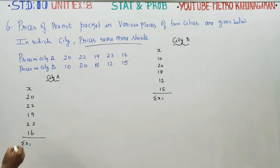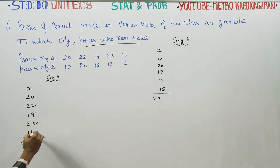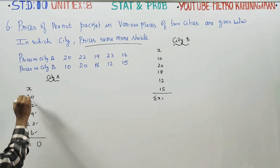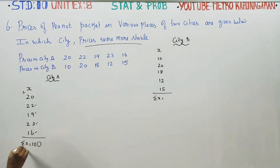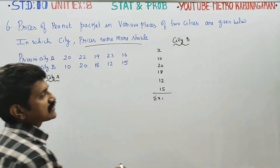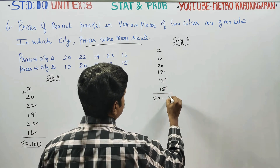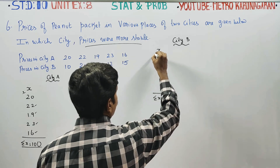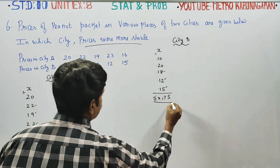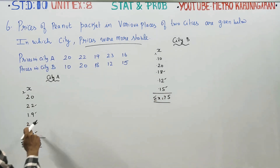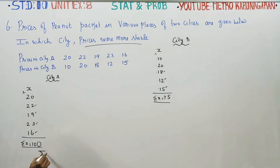To find sigma x values: 9 plus 2 is 11, 11 plus 3 is 14, then 20 — carrying 2 — gives 4, 6, 7, 10. So sigma x for City A is 100. The number of values is 5, so x̄ equals sigma x by n, which is 100 by 5, giving an answer of 20.